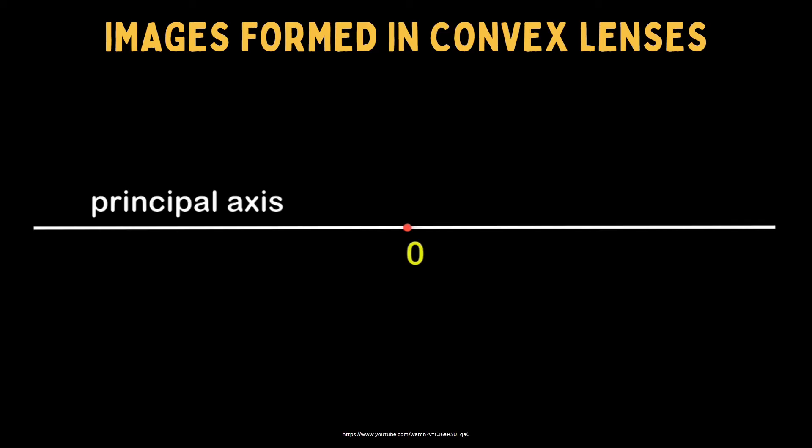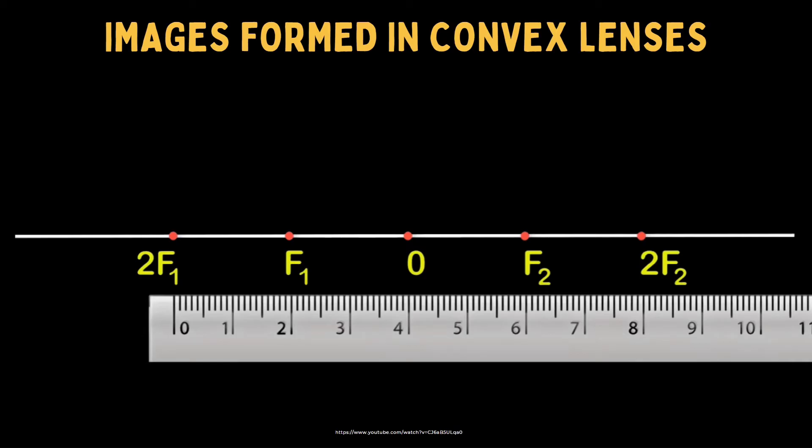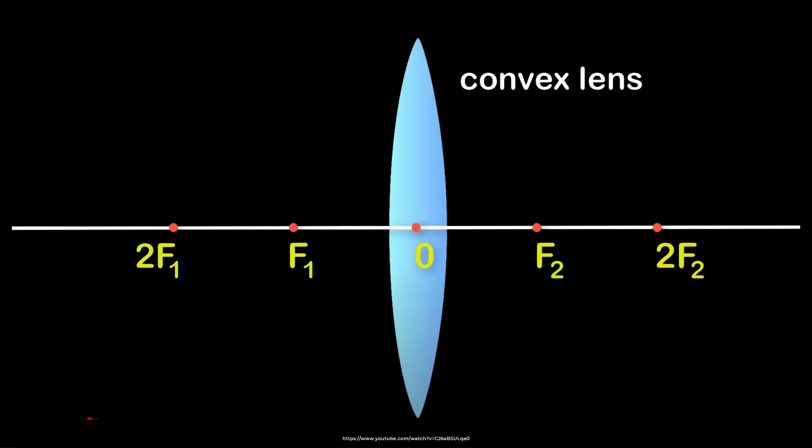Next, we are going to use a ray diagram for image formation in lenses. Let us draw a principal axis. As you can see, we have an optical center. In our drawing, we will place every two points. This will be our ray diagram. We have the optical center, we have the principal foci. Since we have two focal points, but if it's just one, we call it focus. And also, we have the convex lens.